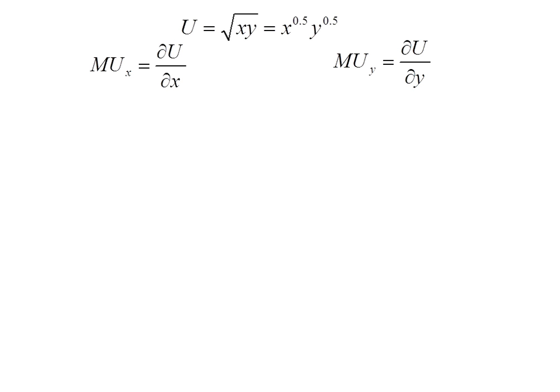Marginal utility of x is the partial derivative of utility with respect to x, and same thing for marginal utility of y. We've done this problem several times before so it should start looking familiar taking this derivative.